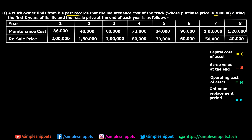For the first year the maintenance cost is 36,000 whereas the resale value is 2 lakhs — he bought it at 3 lakhs but after one year the resale price drops to 2 lakhs. For the second year the maintenance cost increases to 48,000 from 36,000, because he's using his truck daily. Maintenance cost goes up and resale price goes down as years pass. We want to find the optimum period during which he should replace or resell his truck.